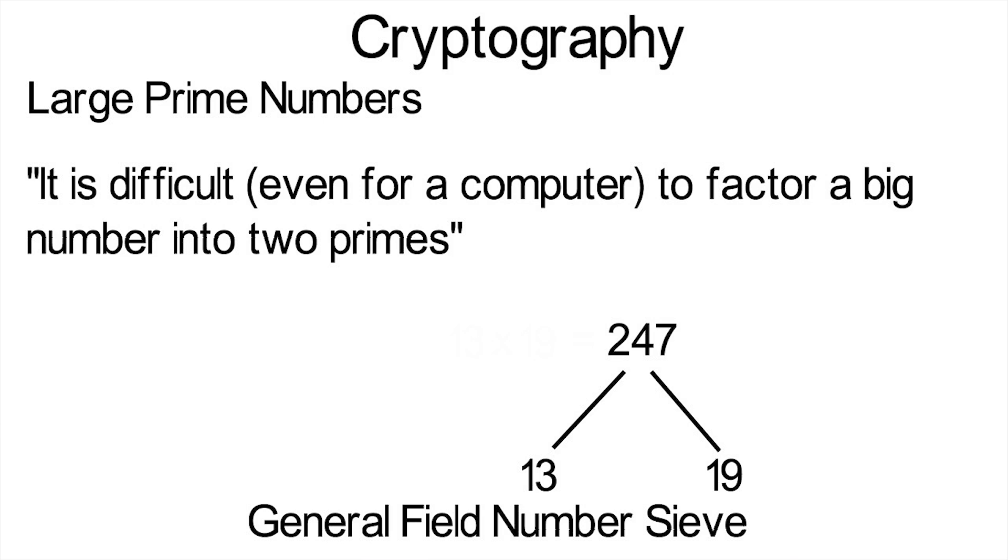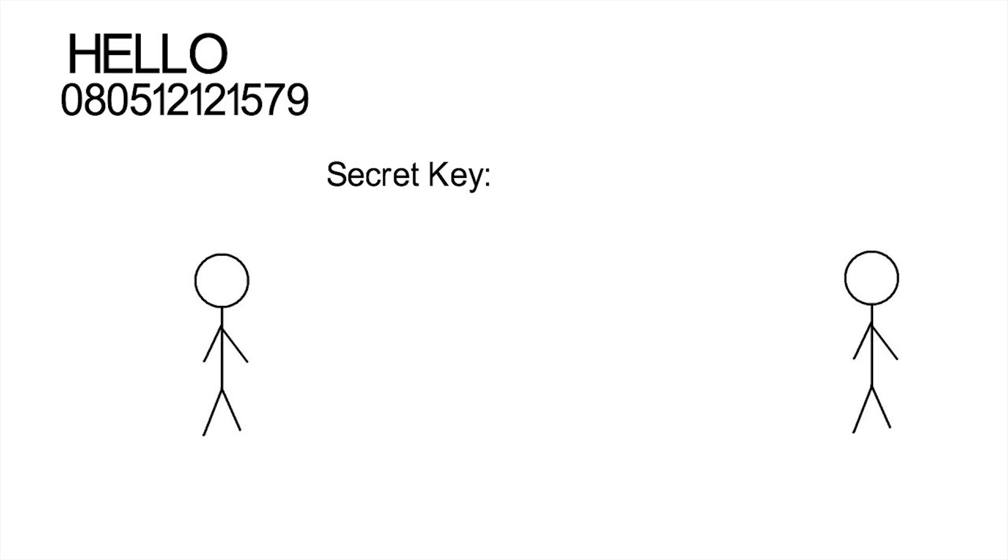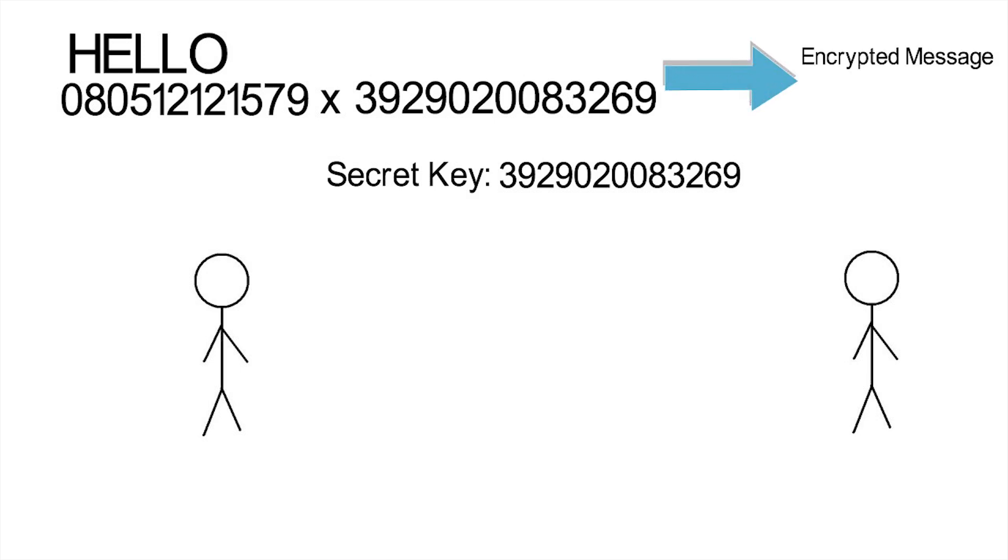So like I talked about in the computer science video, if we wanted to transmit the phrase hello, we could turn that into a prime number, like by turning each letter into whatever number place it is in the alphabet. H is the eighth letter, E is the fifth letter, and so on. Then we just add a small ending to make it prime. Then you and your friend who you want to send this message to could exchange a secret key, which is a really big prime number as well. When you want to transmit hello, you just multiply it by your secret key, and send that to your friend.